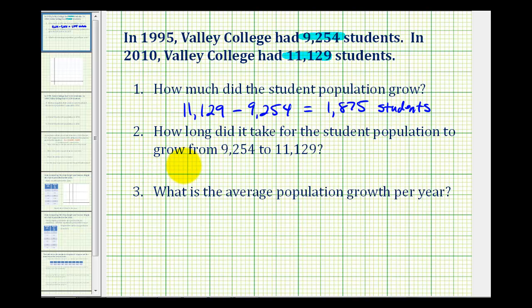For question number two, when it asks how long did it take for the student population to grow from the beginning to ending student population, this will be the difference in the years. So now we'll find the difference between 2010 and 1995, which is equal to 15, which means it took 15 years.